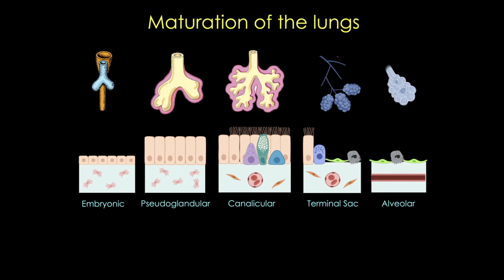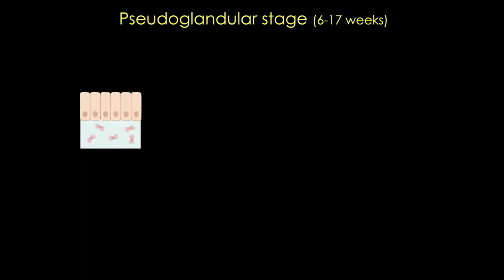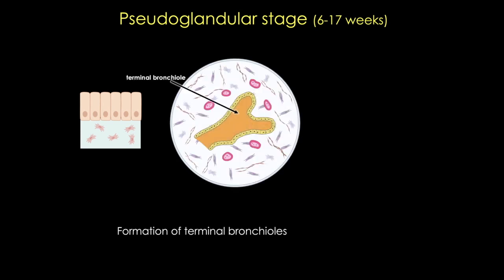Let's start with the pseudoglandular stage. The major events that occur during this stage are the formation of the conducting airways all the way up to the terminal bronchioles. In this cartoon, you can see that the epithelium has cells that are still mostly columnar. Here's a cartoon showing a terminal bronchiole surrounded by connective tissue. You can also see numerous capillaries that have formed via angiogenesis, but importantly they're not yet in contact with the respiratory epithelium, so the lung during this stage cannot perform gas exchange.